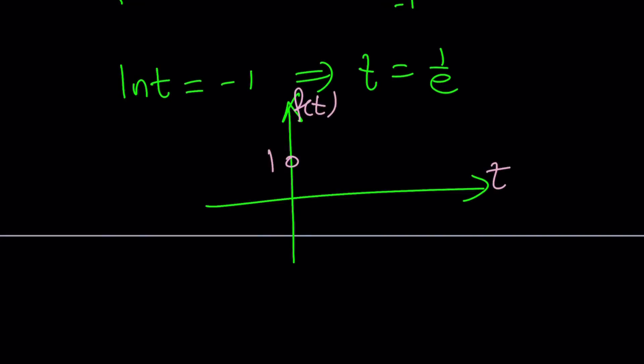It starts at 0,1 with an open dot. It goes down and then goes up, making a minimum at 1 over e, comma 1 over e to the power 1 over e, because this is the graph of t to the power t. And obviously, 8 to the power 8 is such a large value.